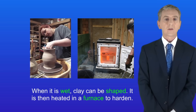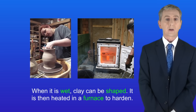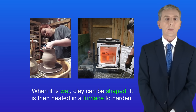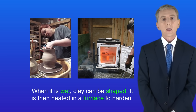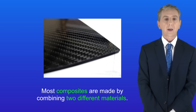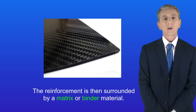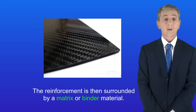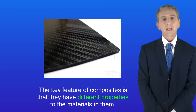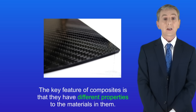Ceramics are an important group of materials. Another important group are composites, so we're going to look at those now. Most composites are made by combining two different materials. We have the reinforcement, which consists of fibres or fragments of one material. The reinforcement is then surrounded by a matrix or binder material. The key feature of composites is that they've got different properties to the materials in them.